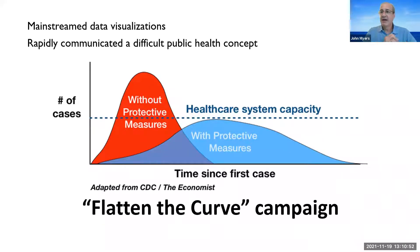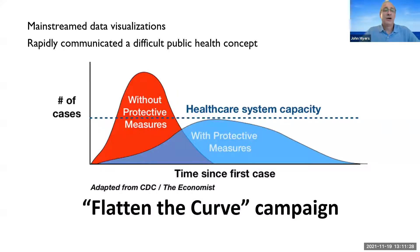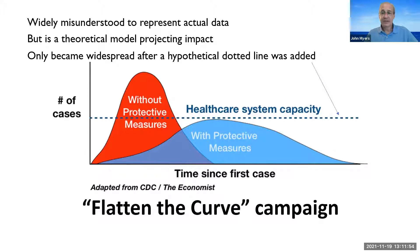It's the flatten the curve graph. People have seen it and are familiar. It's probably the most famous graph in the world right now, and over the last year and a half it was extremely widespread. Those of you on social media more than I am probably got it over and over in various versions. It was part of this campaign to get people to wear masks early on, especially before the vaccine, and it was hugely successful online. But I want to make a couple of points about it. First of all, it mainstreamed data visualizations to some extent. It was very good at communicating a difficult public health concept.